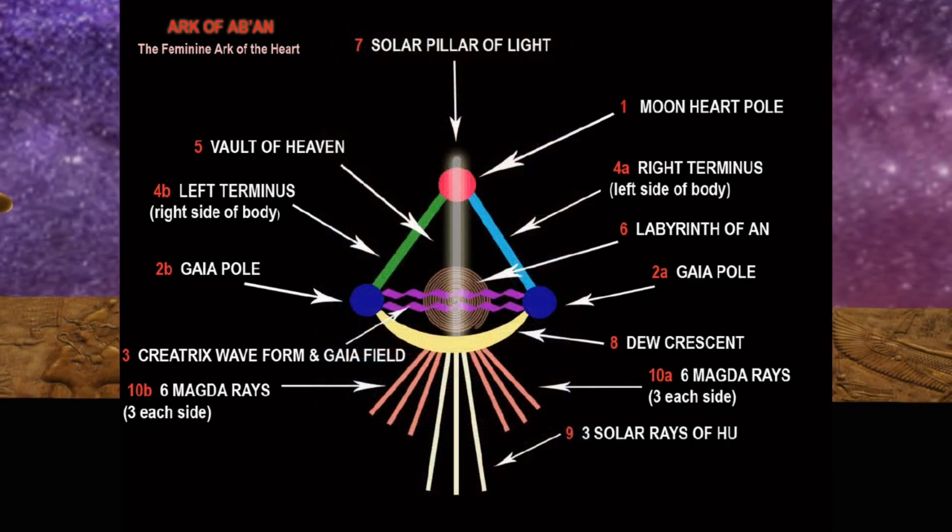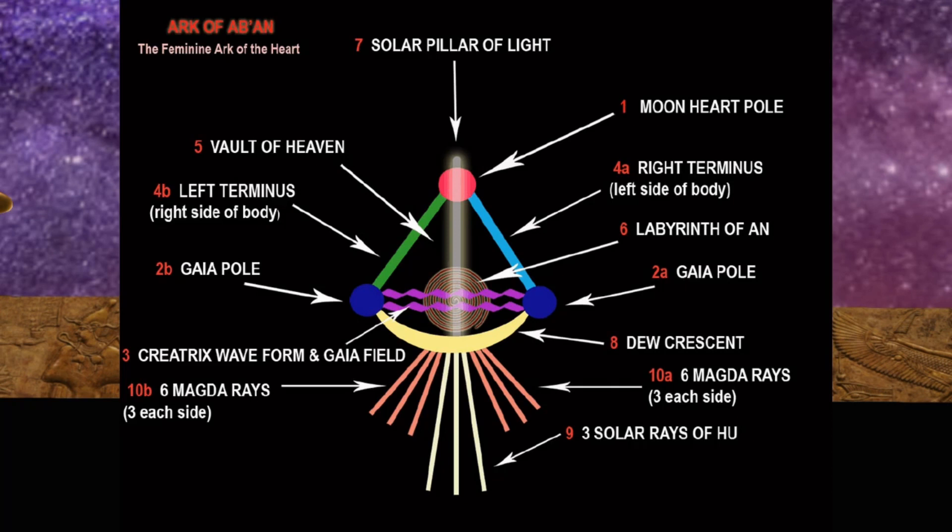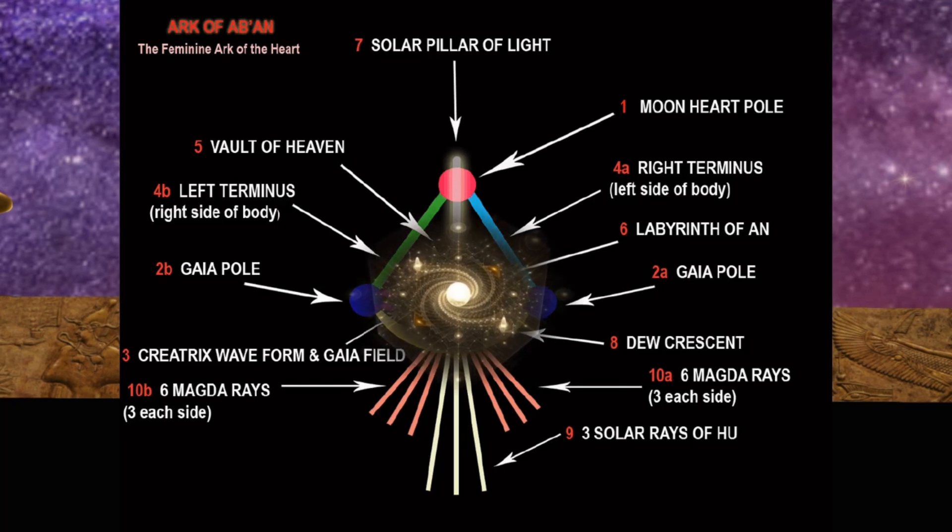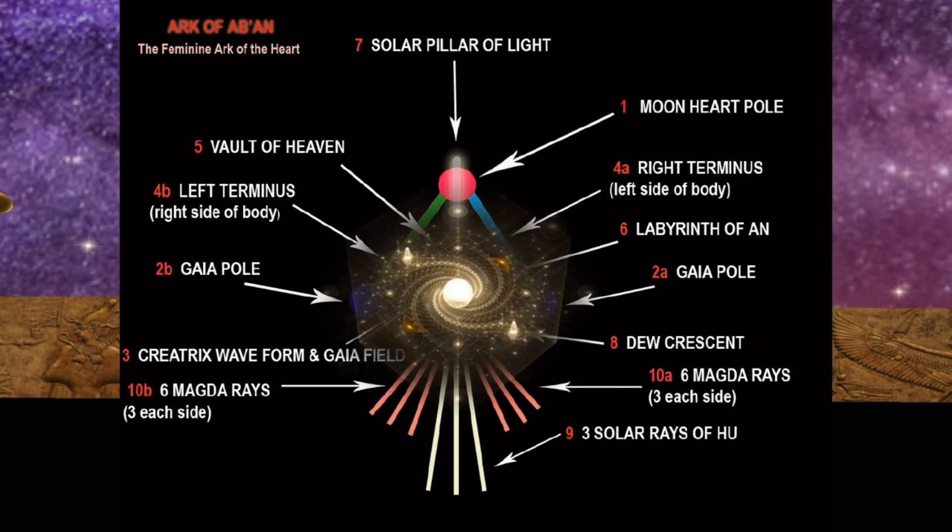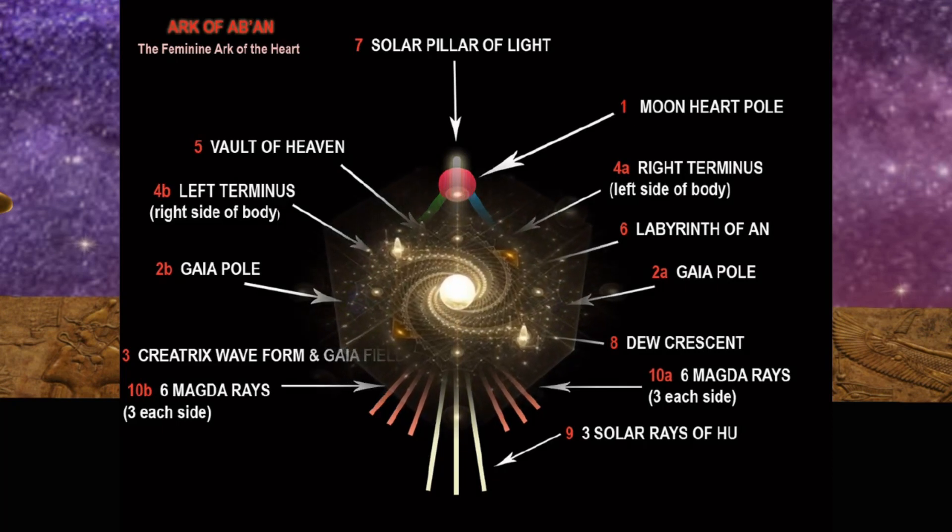The third node, creatrix waveform and Gaia field. The energy waveform coming out of the heart of Gaia, Earth, creates a field of its own generation. This field interacts with all life, sustaining and evolving it in accordance with the evolution of Gaia herself.